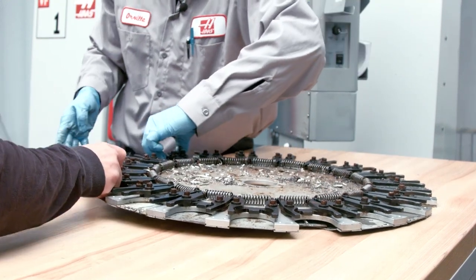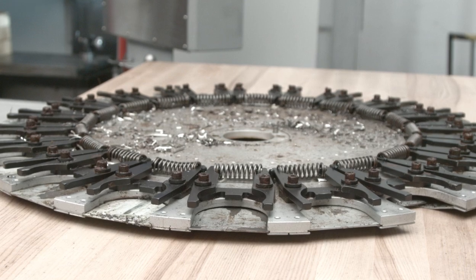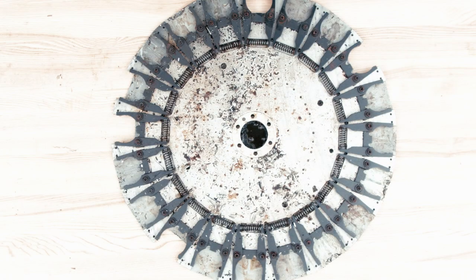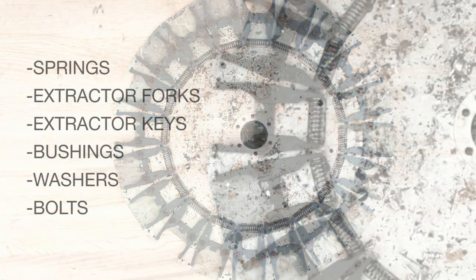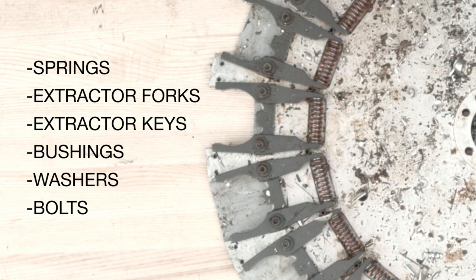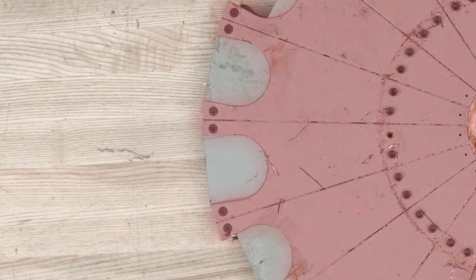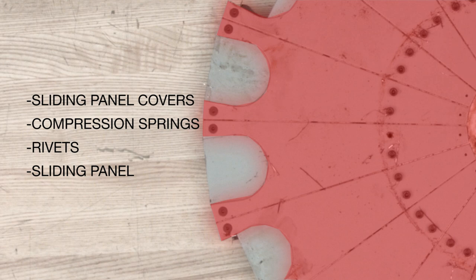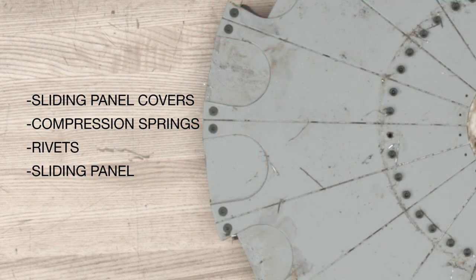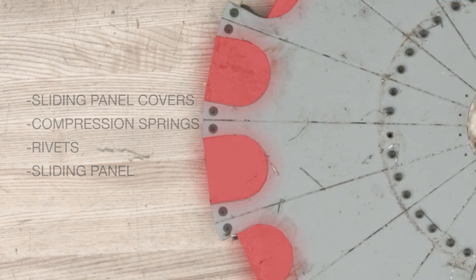With the carousel plate on the workbench, we're going to remove all the components from both sides of the carousel plate. On the back side of the carousel plate, we'll take off the springs, the extractor fork, the extractor keys, the bushings, the washers and the bolts. And on the front side of the carousel plate, we'll remove the slider panel covers, the compression springs, the rivets and the sliding panels.